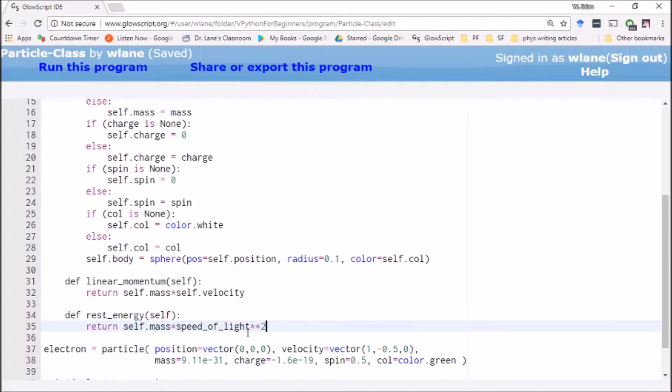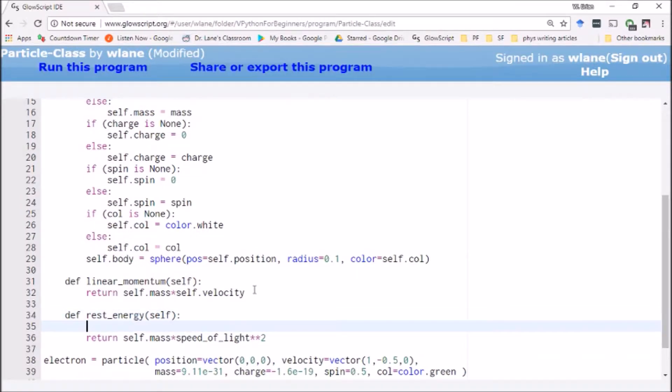And I can just return self.mass times speed of light squared. Now in order to do that, of course, I'm going to need to define this thing called the speed of light. A simple way to do that is going to be to define it here. So speed of light equals 3 times 10 to the 8. And here I can reference this. It'll know what speed of light is and it'll return for me the correct answer.